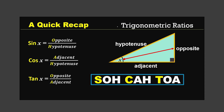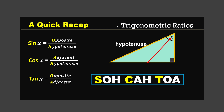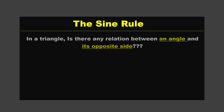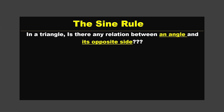The opposite and adjacent sides are decided by the given acute angle. If the angle is given, the opposite side will be the side opposite to it, and the remaining side will be termed adjacent. When the angle changes, the opposite and adjacent sides change as well. Now let me ask you a question: in a triangle, is there any relation between an angle and its opposite side? Let's discuss it with the help of a diagram.